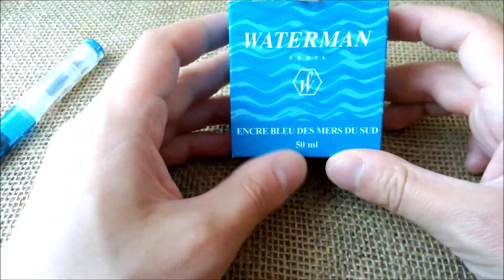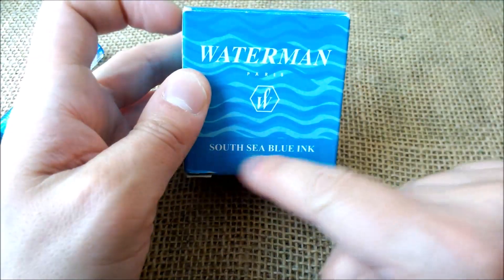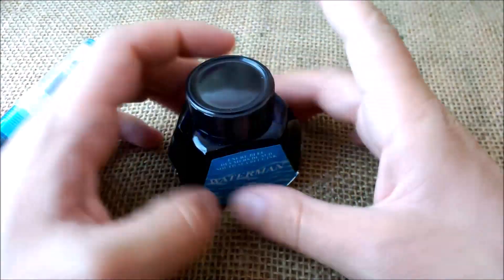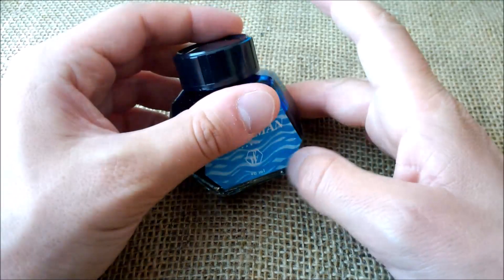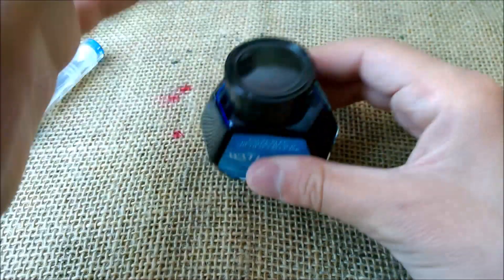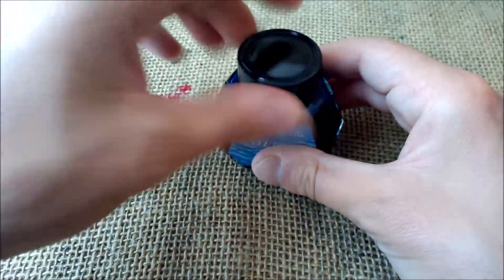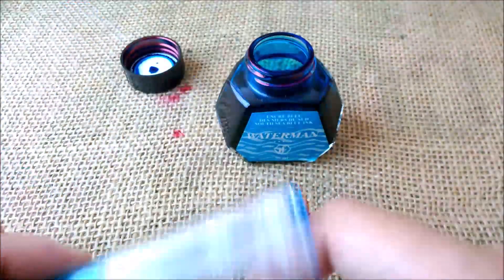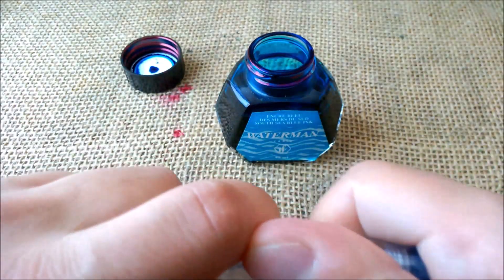We will use the Waterman ink—this is the South Sea Blue ink. Now the ink has a different name, but it is the same color. I don't recall right now the current name of the ink, but it is the same thing, just a different version. So we uncap the bottom, we take the cap off—it is a slip cap—and we unscrew the barrel.